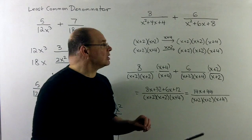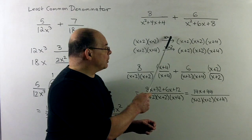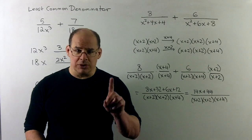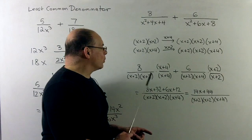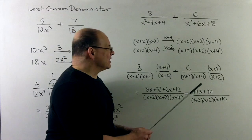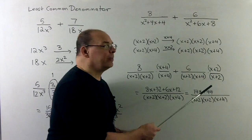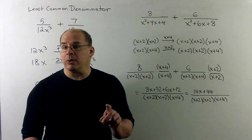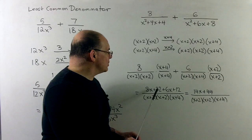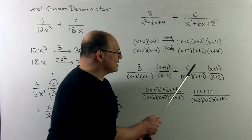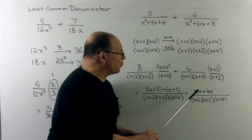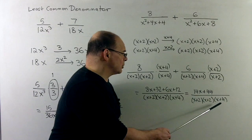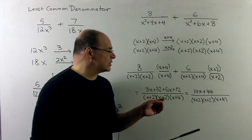To reach the LCD, the first fraction multiplies by (x+4)/(x+4) and the second by (x+2)/(x+2). Distributing: 8 times (x+4) gives 8x + 32; 6 times (x+2) gives 6x + 12. Adding numerators: 14x + 44 over (x+2)(x+2)(x+4). That won't simplify any further, so that's our answer.